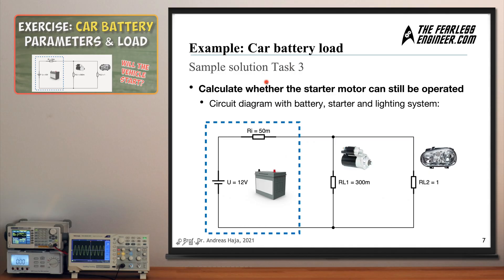And now we get to task number three, which is to compute whether the starter motor can still be operated if the lighting system here on the right is also switched on and thus attached in parallel to the starter which you can see here. So we now have an expanded circuit, it's a branched circuit, and the resistor, the load resistor number two with one ohm, is in parallel to the load resistor number one with 0.3 ohm. And the question is: is the voltage drop across the starter motor still sufficient to power this device here? And let's find out.